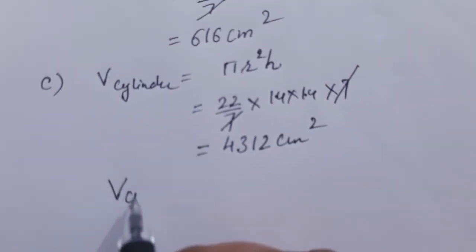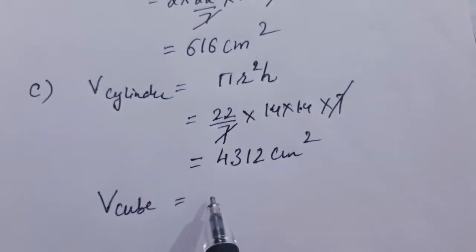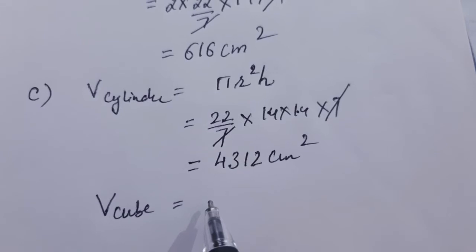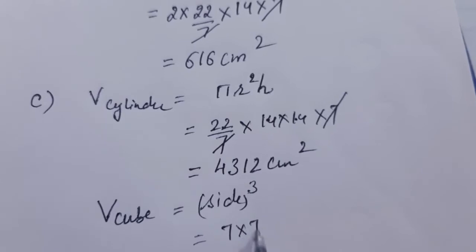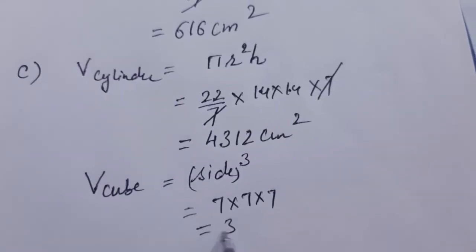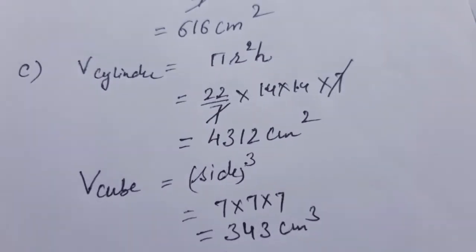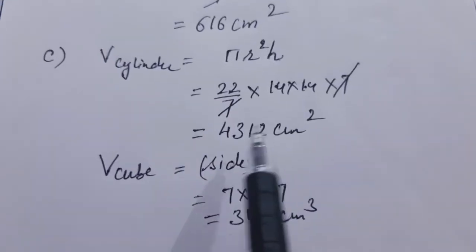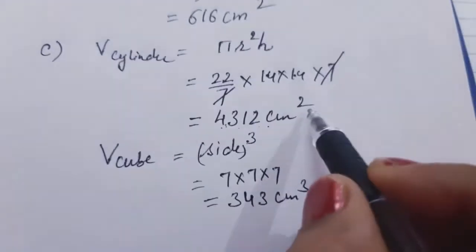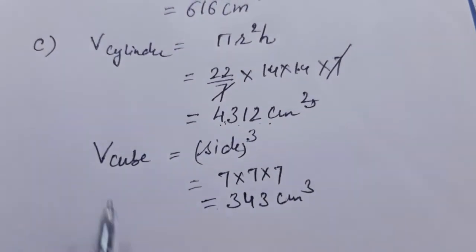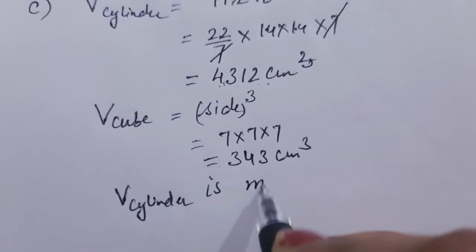Volume of cube = side³ = 7 × 7 × 7 = 343 centimeter cube. Now let us compare. Volume of cylinder is 4312 and volume of cube is 343, so the volume of cylinder is more.